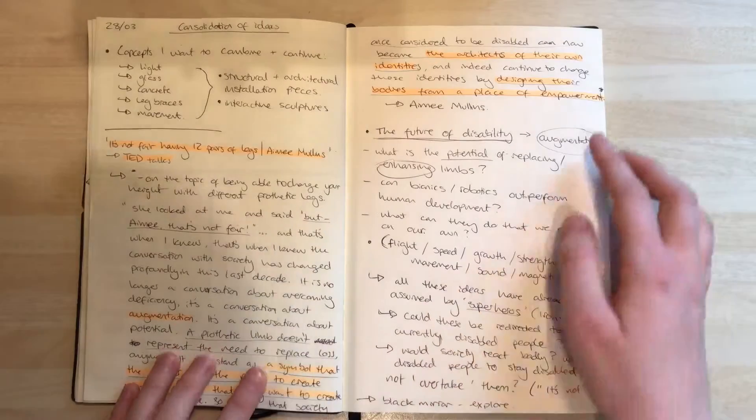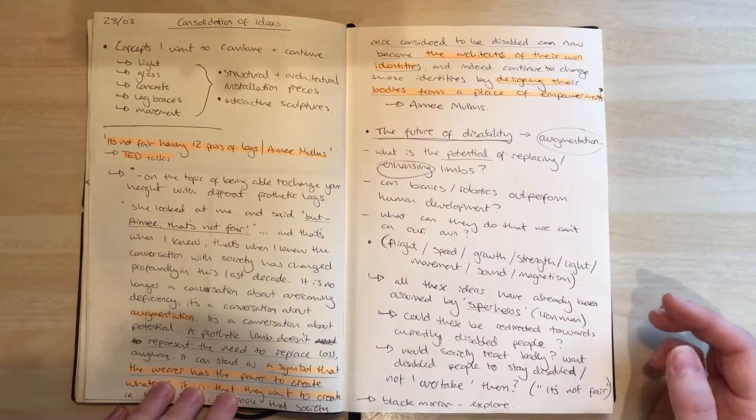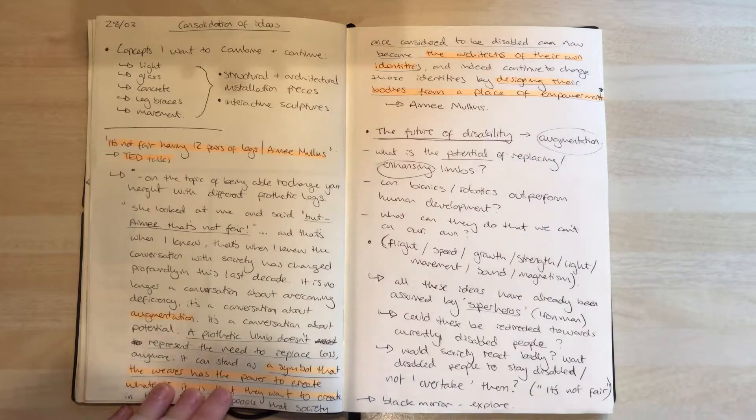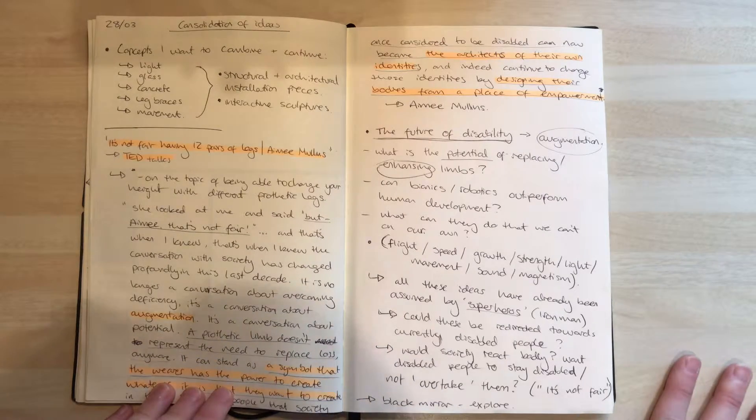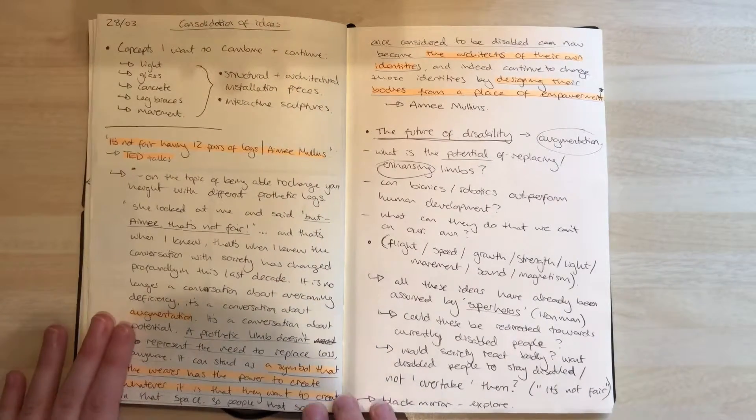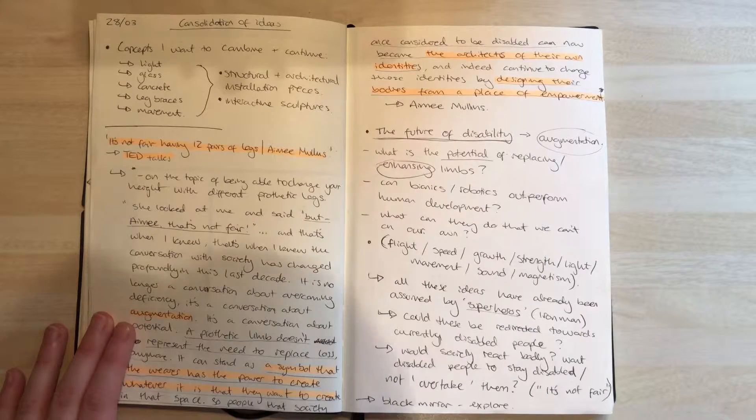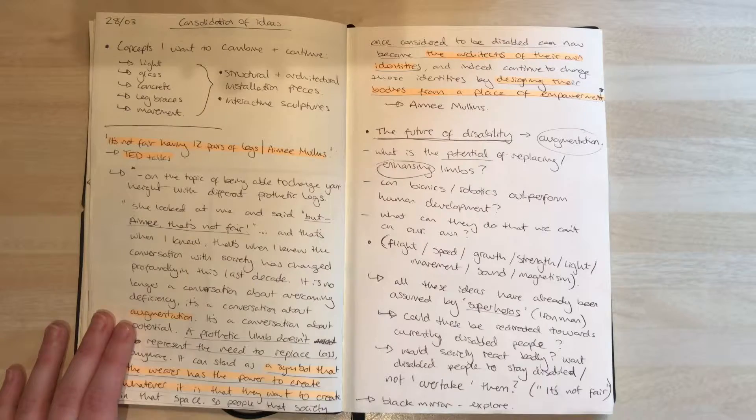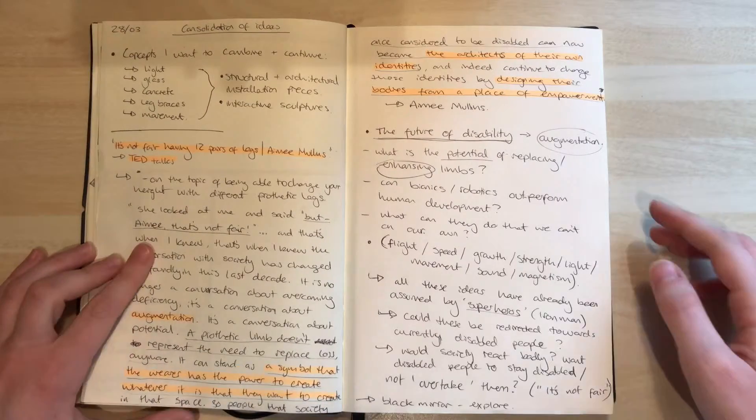These are notes that I made from a TED talk that I listened to from a woman who is a double amputee, and she brought up ideas of where disability is going, and the future of disability, and how people are going to view disabled people in the future.